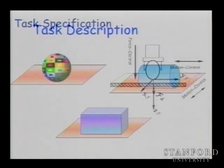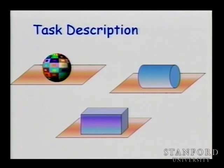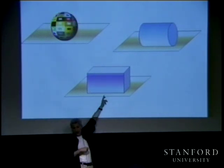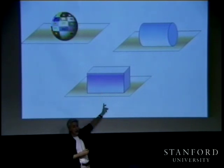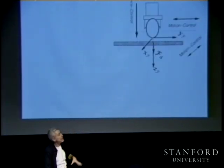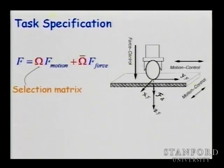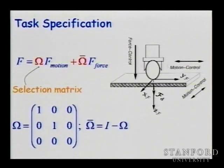We can describe the directions and separate the spaces. In this example, in X and Y there are no rotations about X and Y — you cannot rotate about those. You can rotate about Z, but you cannot move in Z; you can move in X and Y. The space is split into two parts. We go to a description of the space and split it through omega matrices that project motion control into one subspace and force control into the complement — omega-bar — the subspace for force control.